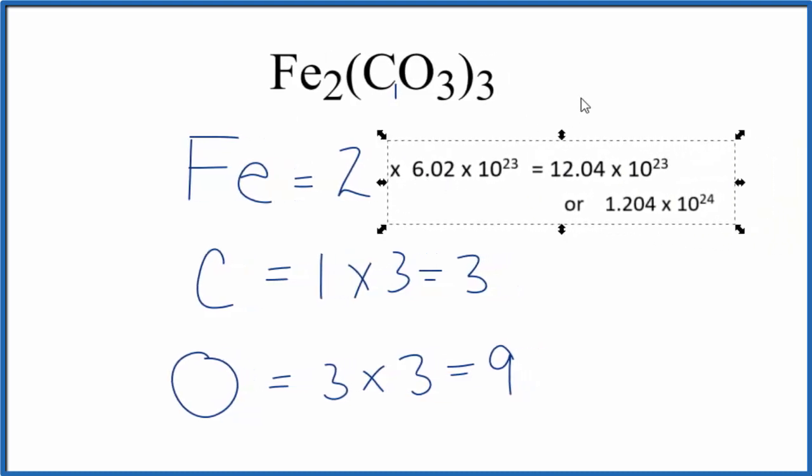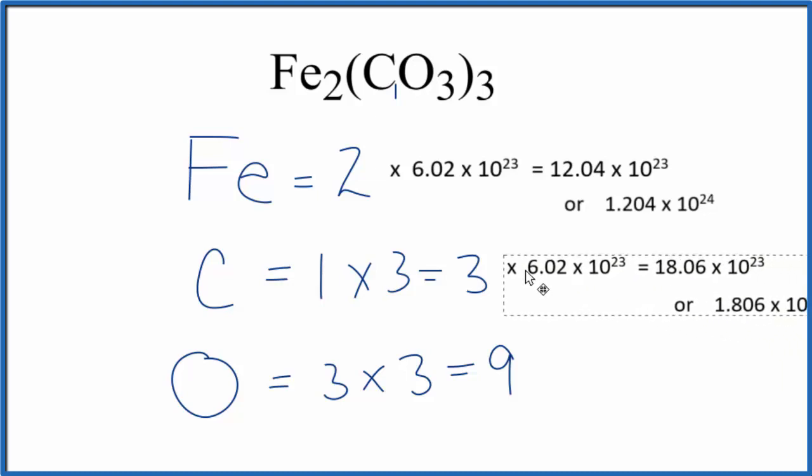So we multiply two times Avogadro's number and we'll get 12.04 times 10 to the 23rd atoms of iron Fe in one mole of iron(III) carbonate. Likewise, if we had three, we could multiply the three by Avogadro's number...